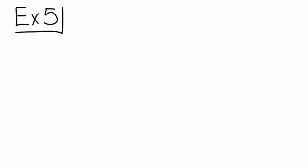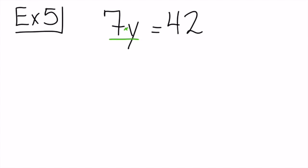Example number five — try this multiplying one on your own. 7y equals 42. You probably already know the answer, but pause the video and show me the three steps. When you're done, hit play. Alright, let's take a look at how we solve this one. Opposite operation — they're doing 7 times y, so I'm going to divide. Same number: 7. Equal sign is a wall, so I copy divide by 7 on the other side. Multiply by 7 and divide by 7 are opposites — they cancel each other out, leaving y.